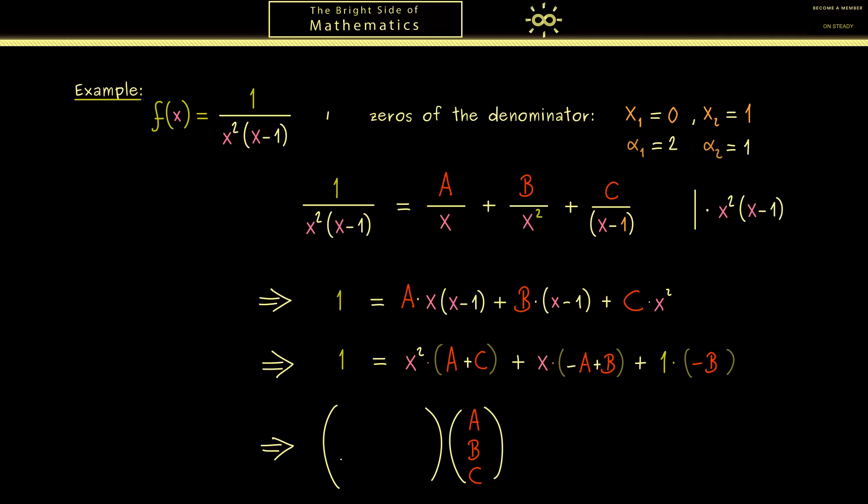Or to put it in other words as a matrix vector multiplication. There the first equation reads A plus C equals 0, which means we have 1, 0, 1 and a 0 here.